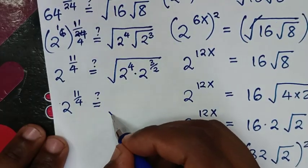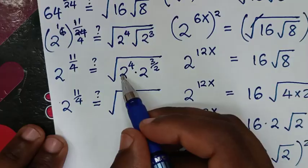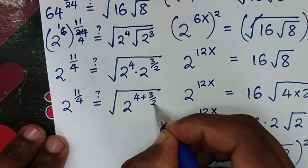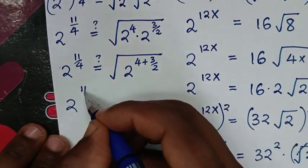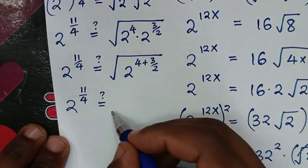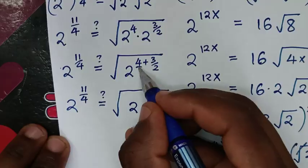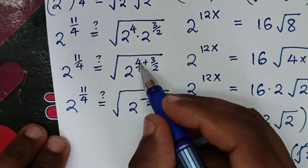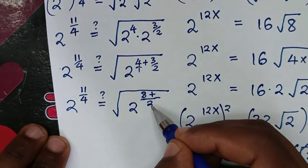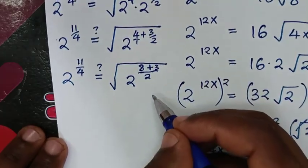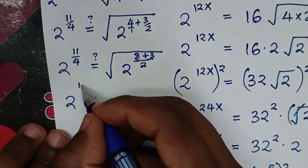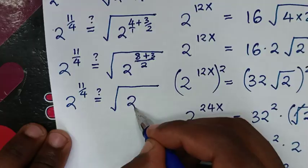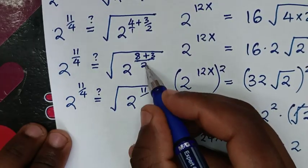Inside the square root, we multiply the same-base powers of 2: 2^4 plus 2^(3/2). Converting to a common denominator: 4 equals 8 over 2, and 3 over 2 stays. Adding the exponents gives 8 over 2 plus 3 over 2, which is 11 over 2. So we have the square root of 2^(11/2).